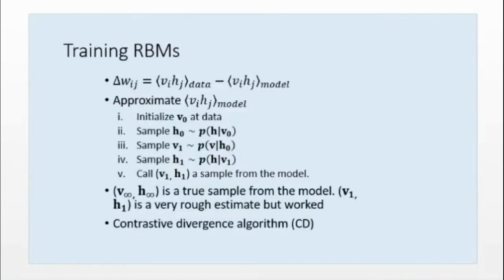So this training RBMs, so what I just discussed - del WIJ, change in words, is original data distribution. So here I am saying, see this angle mark is not that inner product or something, it is the distribution, the data distribution, VIHJ, and VIHJ, this is the reconstruction distribution, you are finding the difference. So how to approximate this? Initialize V naught, now from V naught we are calculating H naught, again from H naught we are calculating V1, now sample H1 we are calculating from V1, now here V1 H1 is the sample. Now we will see difference between V1, V0 H0 and V1 H1.